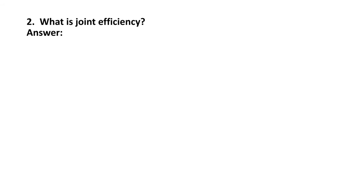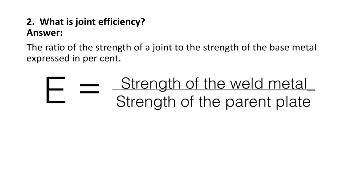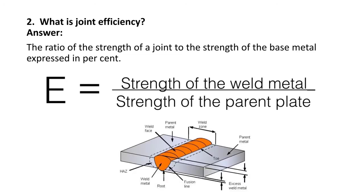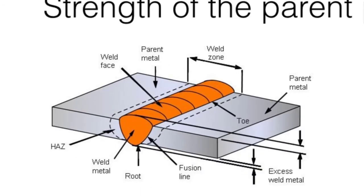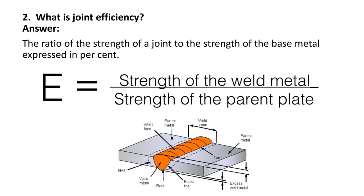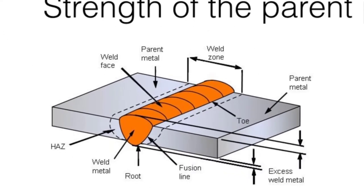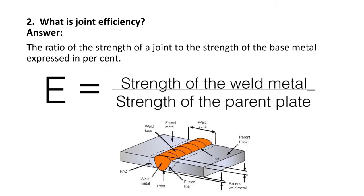Next question: what is joint efficiency? The ratio of strength of the joint to the strength of the base metal is known as joint efficiency. E equals the strength of weld metal divided by the strength of the parent plate. The strength of the weld metal divided by the total strength of the base plate is known as joint efficiency.